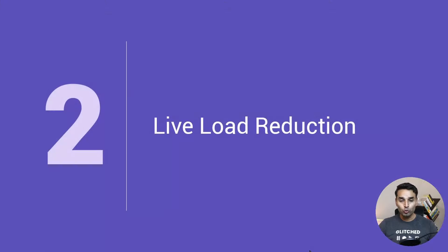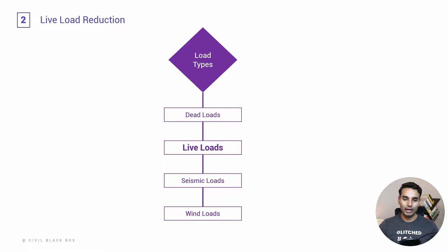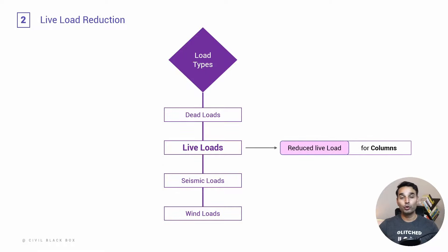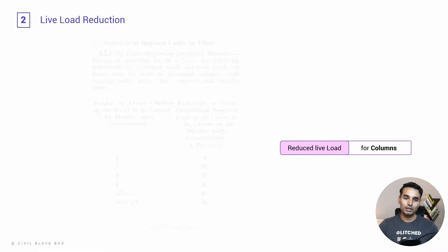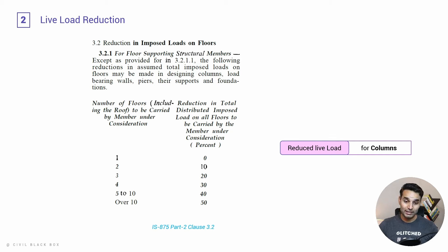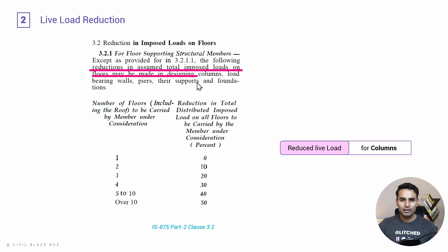Let's move on to concept number two, which builds upon concept number one and is all about live load reduction. When it comes to live loads, columns differ from slabs and beams because this is where we have to reduce those live loads. The reduction of live load comes from IS 875 Part 2, clause 3.2, which says that reductions in total imposed loads on floors may be made in designing columns.